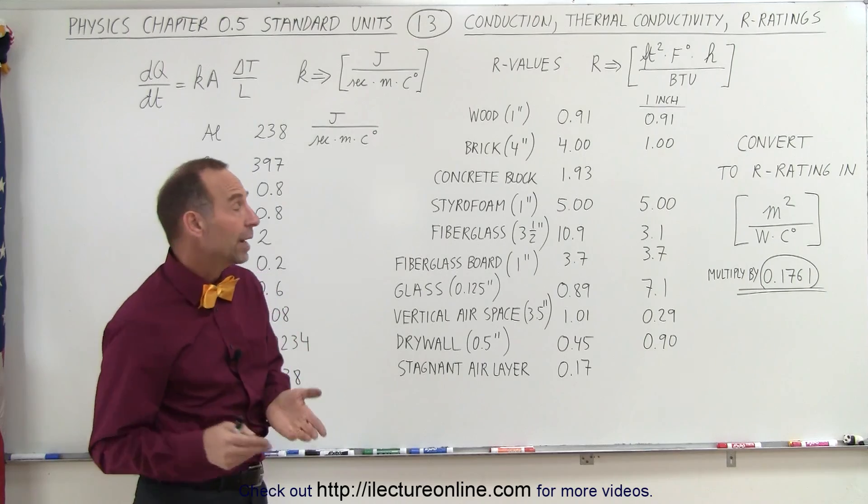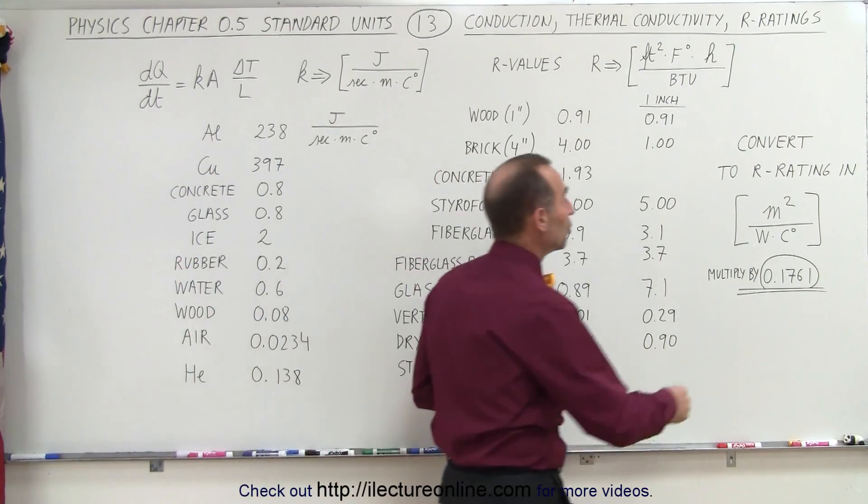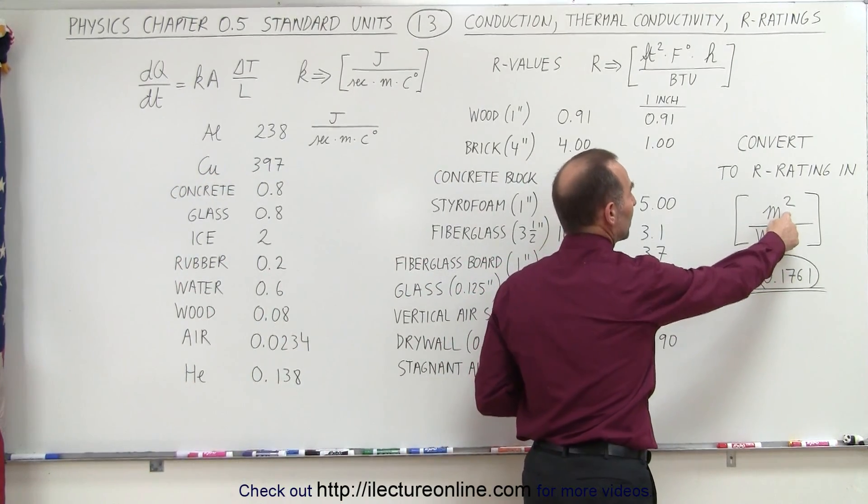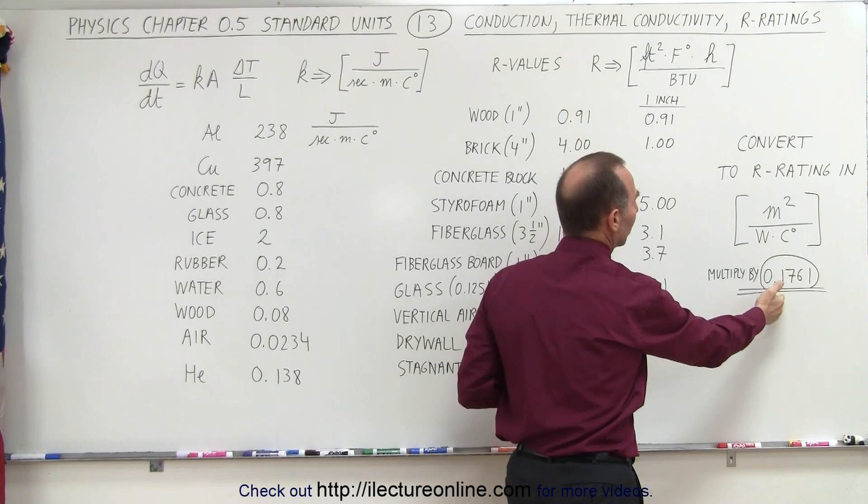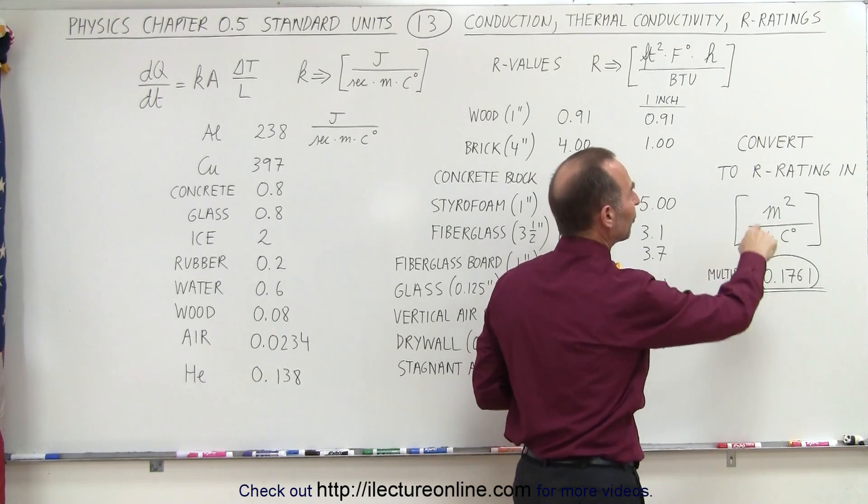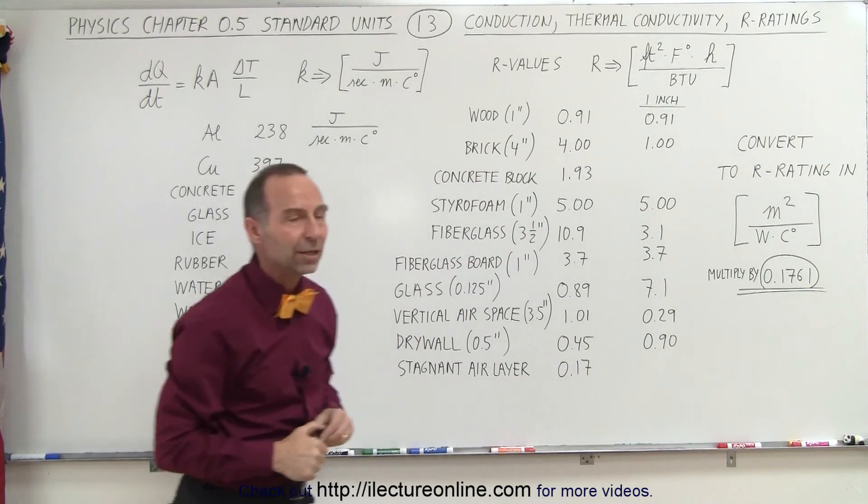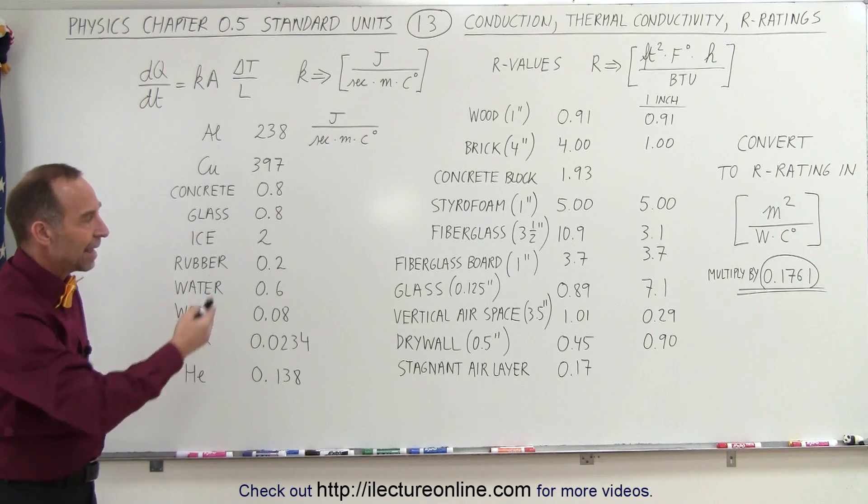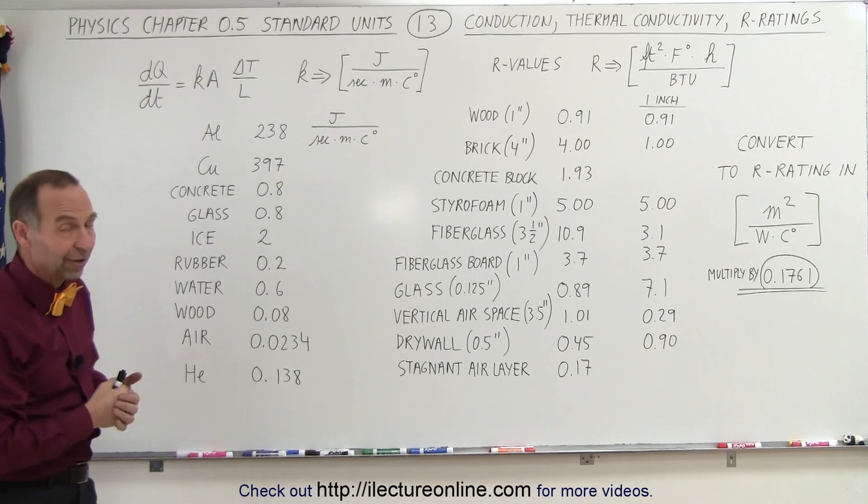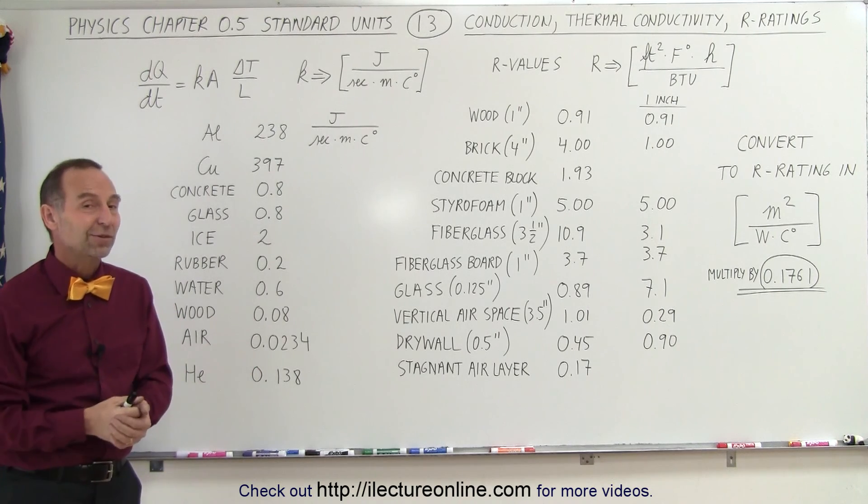Now if you want to convert the R ratings to metric units, where the units are rated per square meter per watt per centigrade degree, we have to multiply these ratings by 0.1761 to convert to the metric type of R rating units. That gives you a feel for heat conductivity and resistance to heat flow in terms of R ratings.